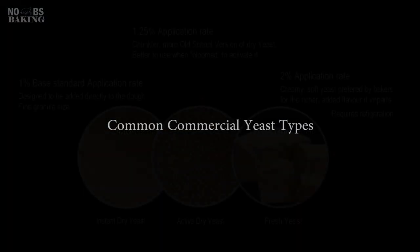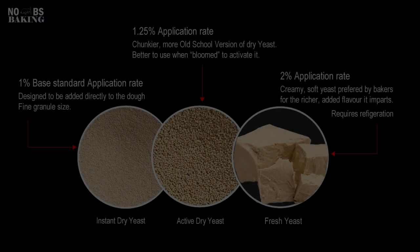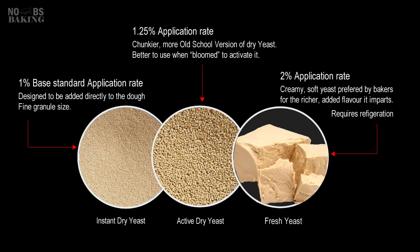Commercial yeast is generally available in three distinct forms: instant, active dry, and fresh. Instant has a fine particle size and is designed for direct addition to the dough, not requiring any pre-activation. The standard application rate is around 1% based on flour.